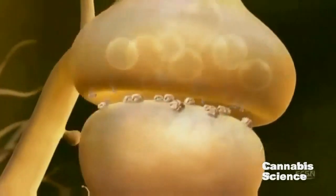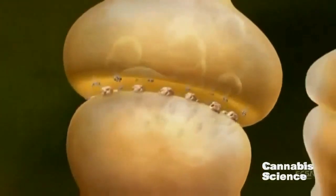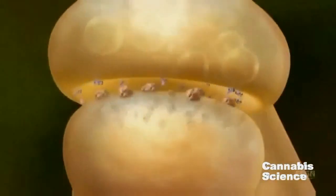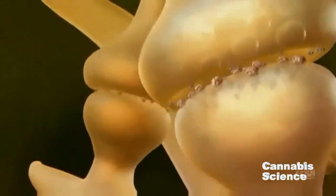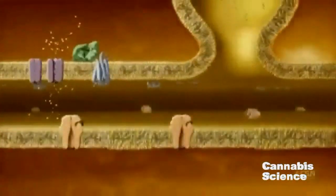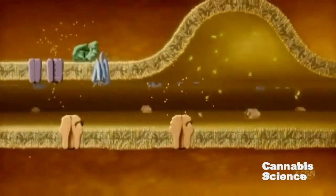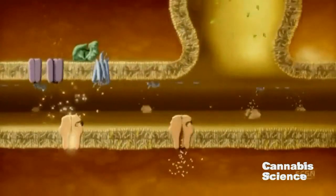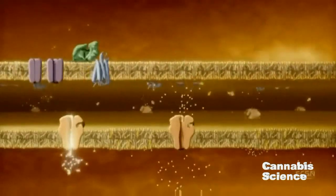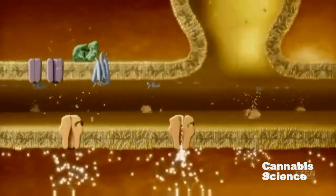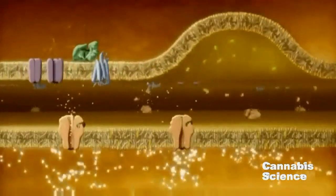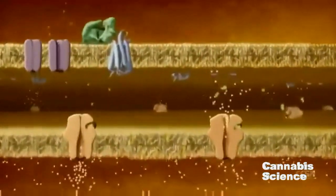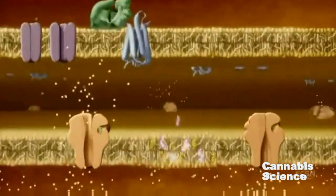Let's take a closer look at this mechanism using a glutamatergic neuron model. When an action potential reaches the axon terminal, membrane depolarization triggers the release of glutamate. Glutamate binds to post-synaptic glutamate receptors, inducing calcium channels to open. During periods of intense neural activity, calcium accumulates in the post-synaptic neuron.